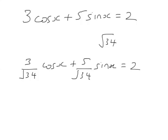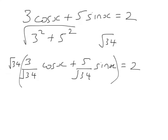I can't just divide by the square root of 34, though. I've got to multiply by the square root of 34 to compensate. Can you see where the square root of 34 comes from? It's 3 squared plus 5 squared, square rooted.